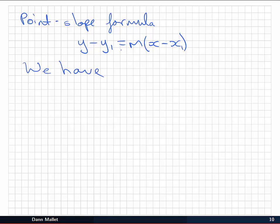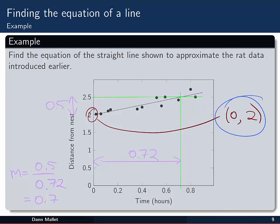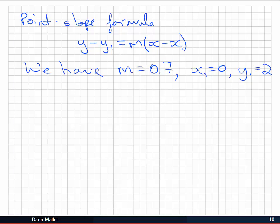Okay, so the point slope formula y minus y₁ equals m(x minus x₁). We have m equal to 0.7. And we have x₁ equal to 0 and y₁ equal to 2. That's from our point here. So we can just plug those in. And we have y minus 2 is equal to 0.7(x minus 0). Now it's just a matter of cleaning it up. 0.7x plus 2.